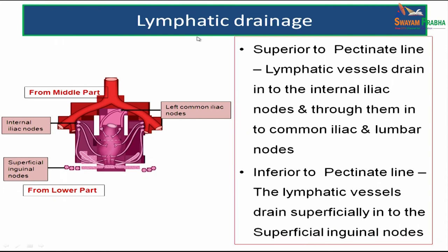For lymphatic drainage: superior to the pectinate line, lymphatic vessels drain into internal iliac nodes, then into common iliac nodes and lumbar nodes. Inferior to the pectinate line, lymphatic drainage goes into superficial inguinal nodes. Hence the pectinate line is an important anatomical landmark.